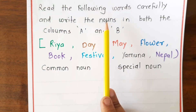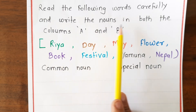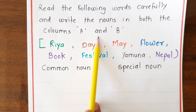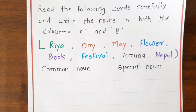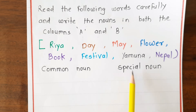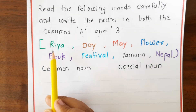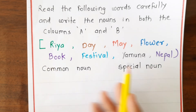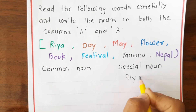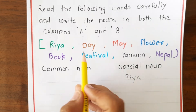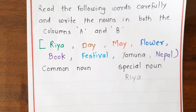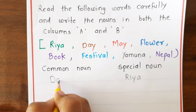Next, read the following words carefully and write the nouns in columns A and B — common noun and proper noun. First, 'Riya' — Riya is a particular person, a girl's name, so it is a proper noun. Next, 'day' — day is a general word; Sunday or Monday would be specific, but just 'day' is a common noun.